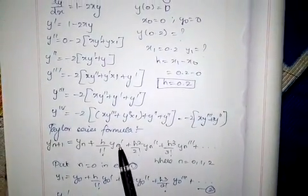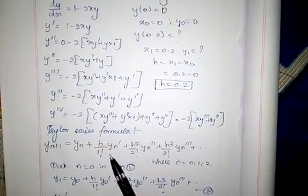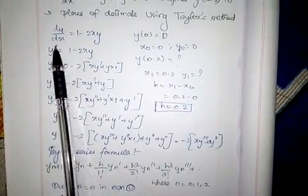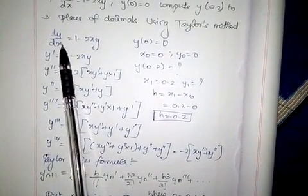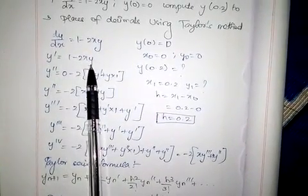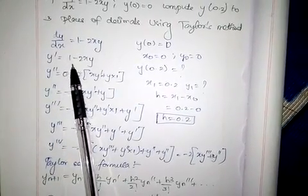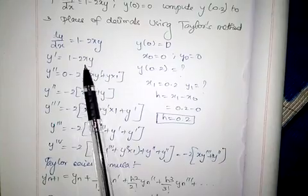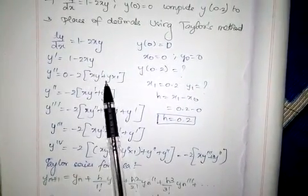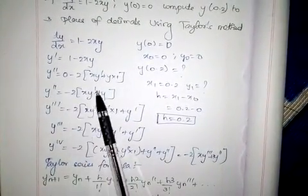First we have to find the derivatives from the given equation. dy/dx, we can write as y' equals 1 minus 2xy. y'' equals 0 minus 2xy differentiated. This is in the form of uv, so we use uv' plus vu'.